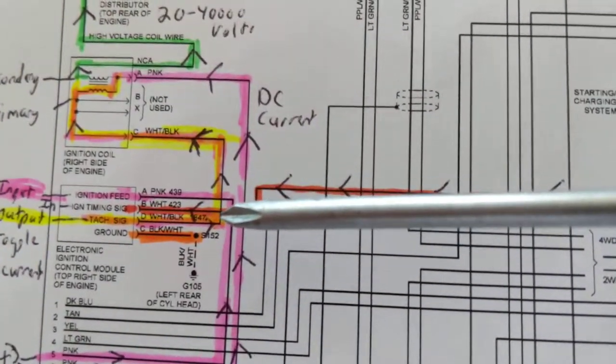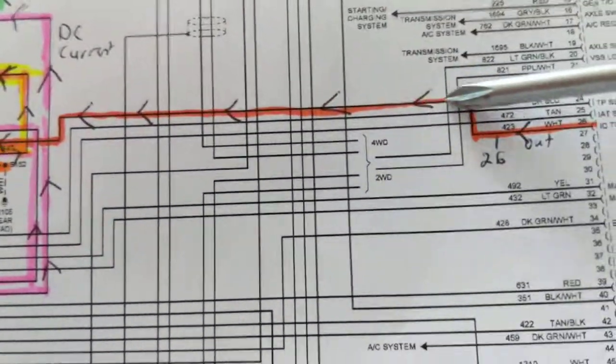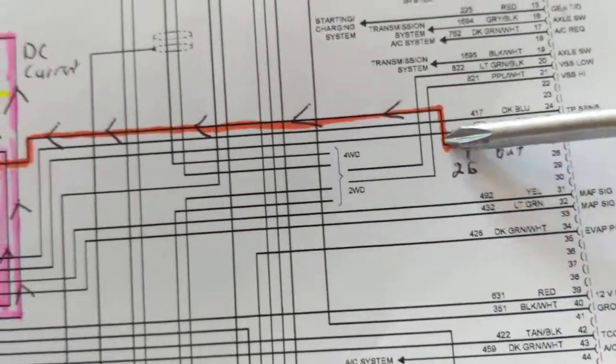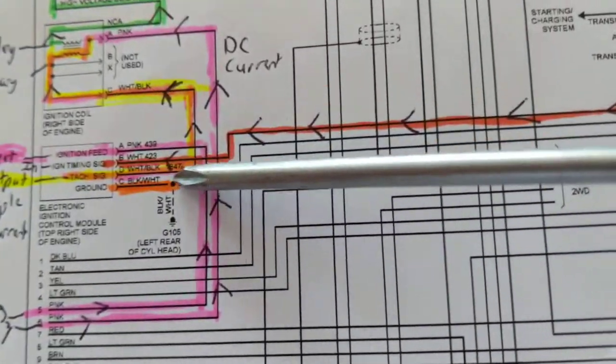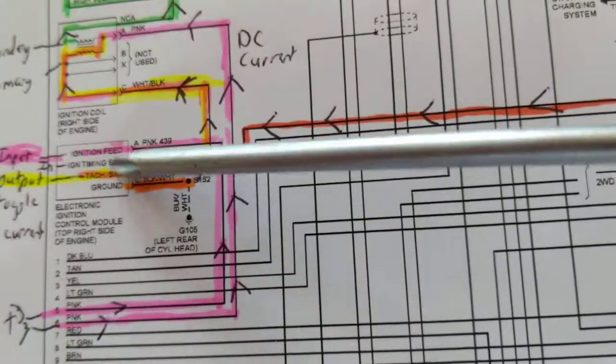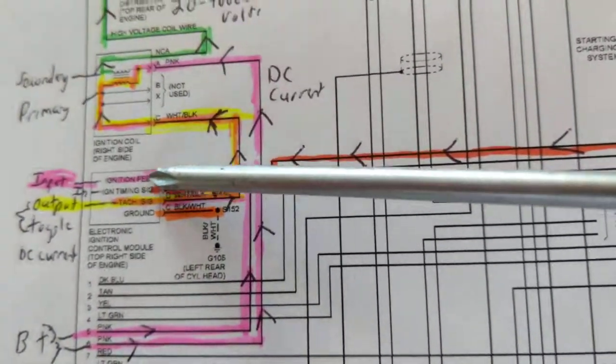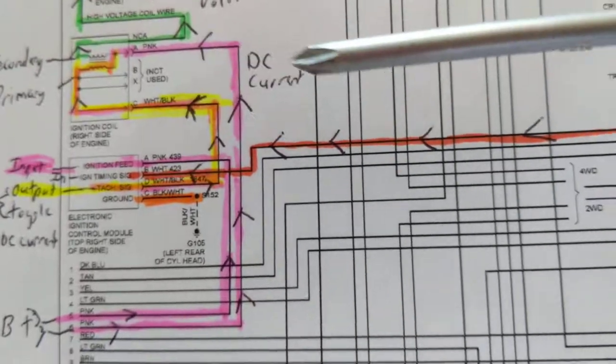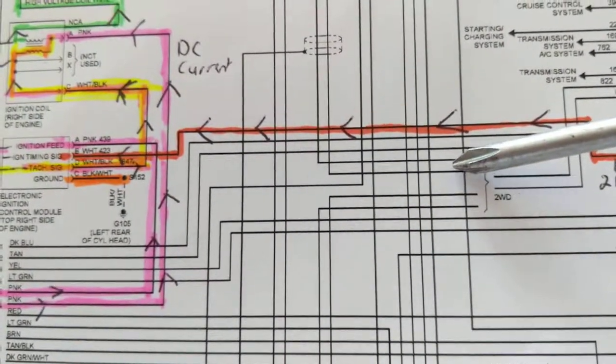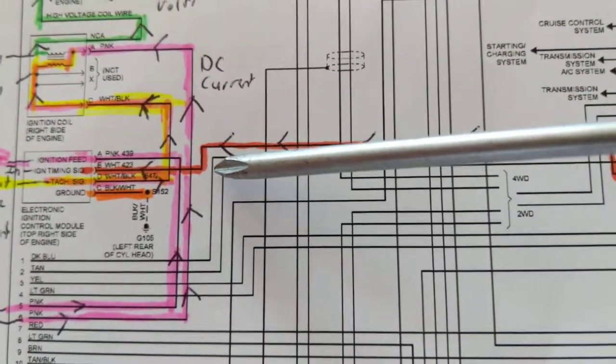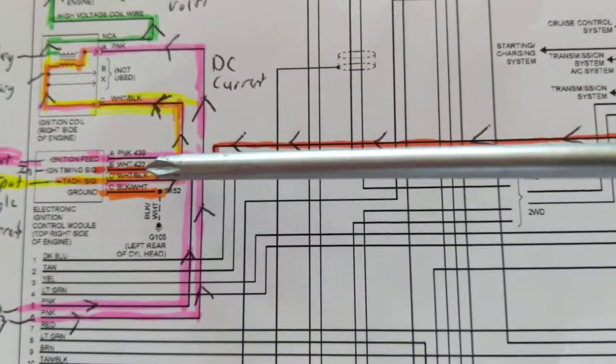To the spark plugs, it is timed by this pulse of pin 26 by the PCM, and everything that the computer controls when to open up the primary. And this will tell when to open up the primary by the computer, and that's by sensors and when we want to advance or retard the spark.